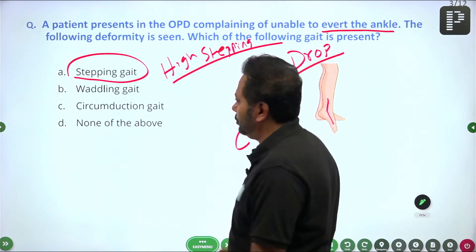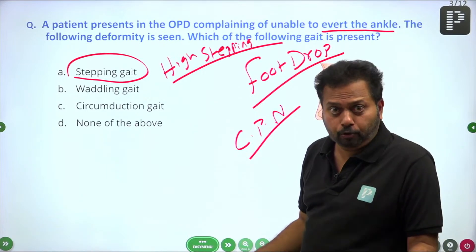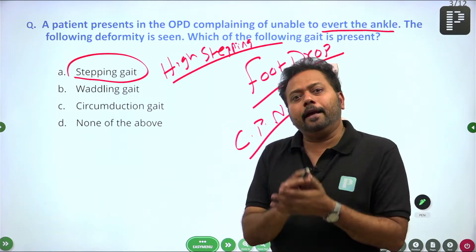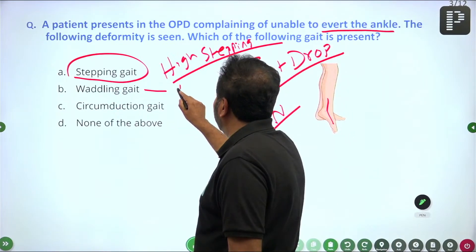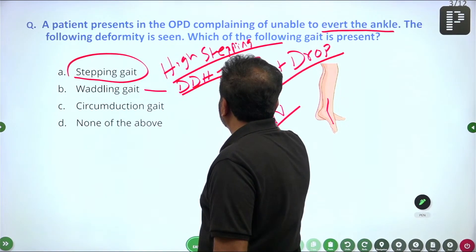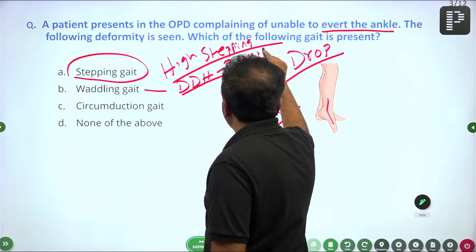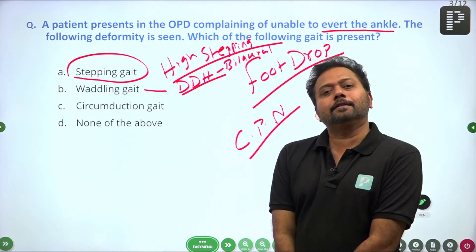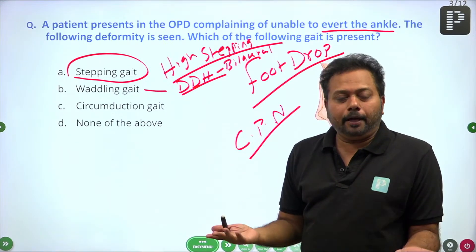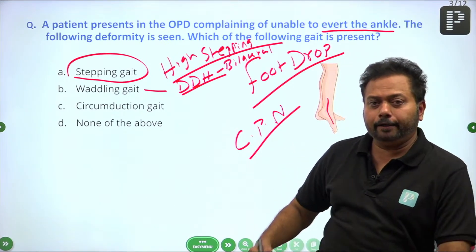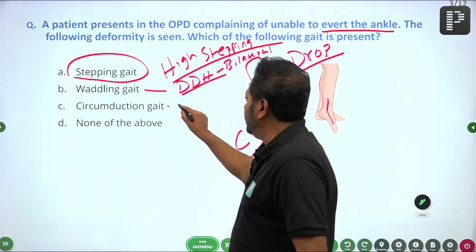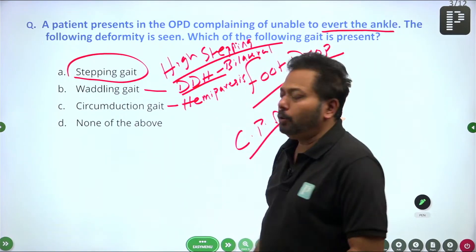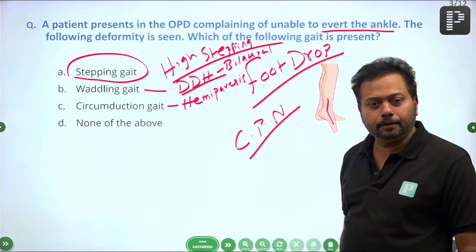We should also know: waddling gait, otherwise called duck waddling gait, is also called sailor's gait and is common in bilateral developmental dysplasia of the hip (DDH) — it should be bilateral. The classical gait in bilateral DDH is called waddling gait. Circumduction gait is seen in hemiparesis. So the answer here is high stepping gait.